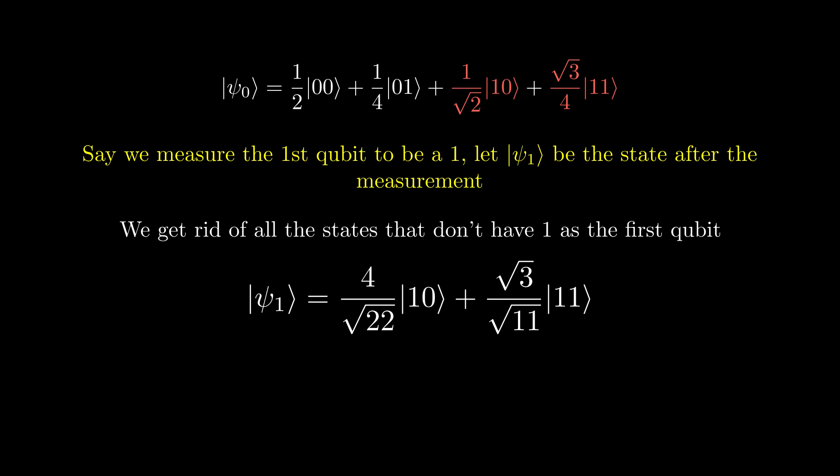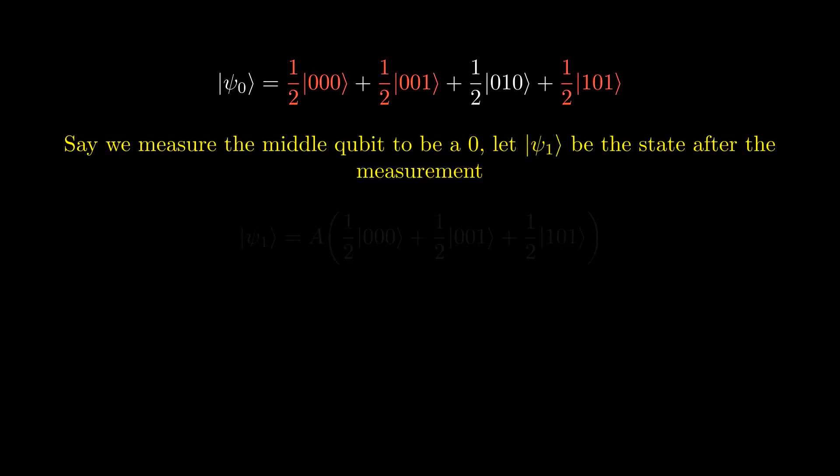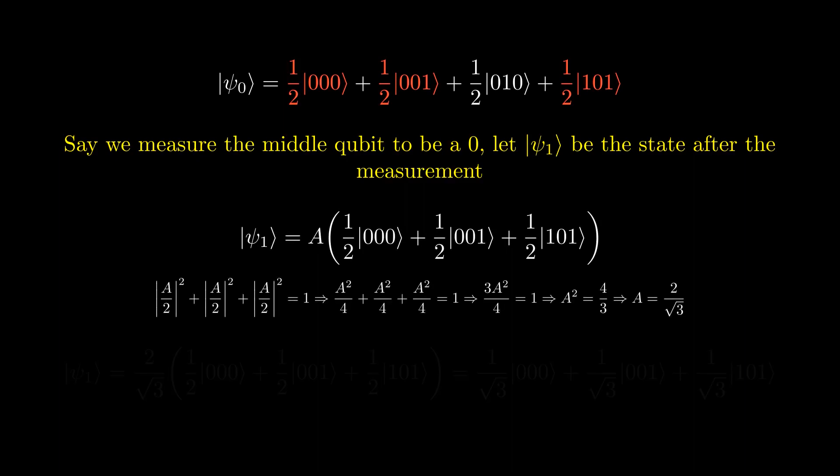We can use these techniques with any number of qubits. Let's go through an example with 3 qubits. Let's say we have this state, and we measure the middle qubit to be 0. The state collapses like this, collapsing into this state.